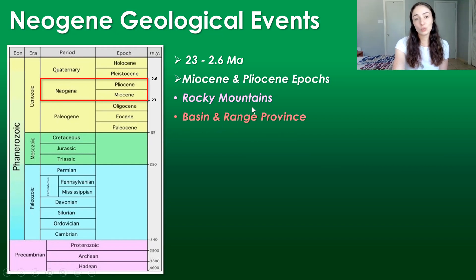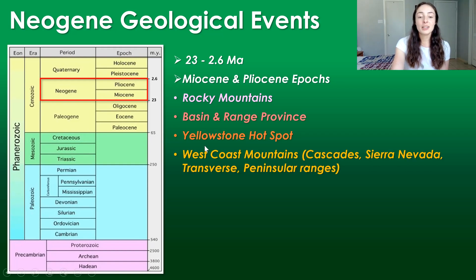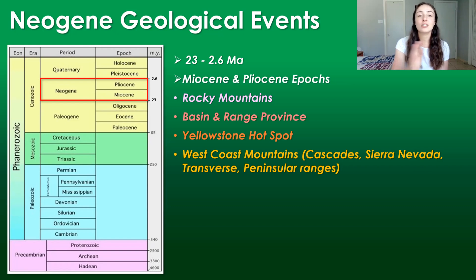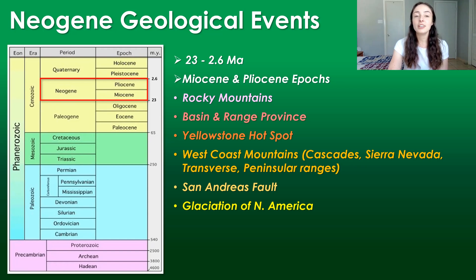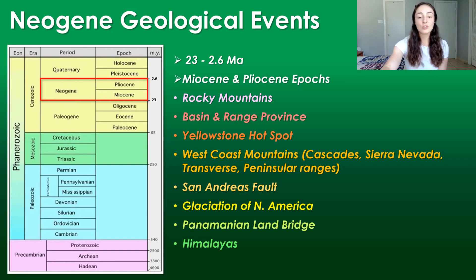The Rocky Mountains formed; the Basin and Range Province of western North America formed; the Yellowstone Hotspot formed and migrated to its current position; and the mountains of the west coast of North America formed, like the Cascades, Sierra Nevada, the Transverse and Peninsular Ranges, and other coastal ranges. The San Andreas Fault formed, glaciation of northern America created glacial landscapes, the Panamanian land bridge formed and connected North and South America, allowing migration of many animals between the two continents. The Himalayas formed, and the Tethys Seaway closed.